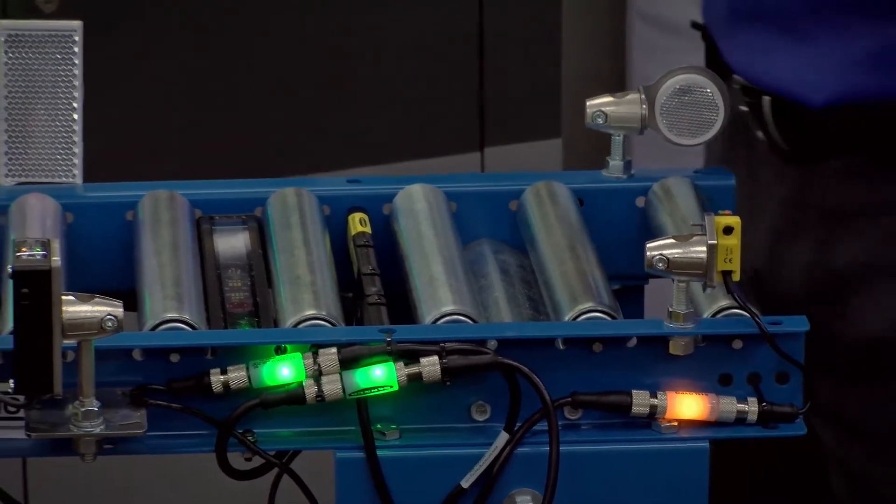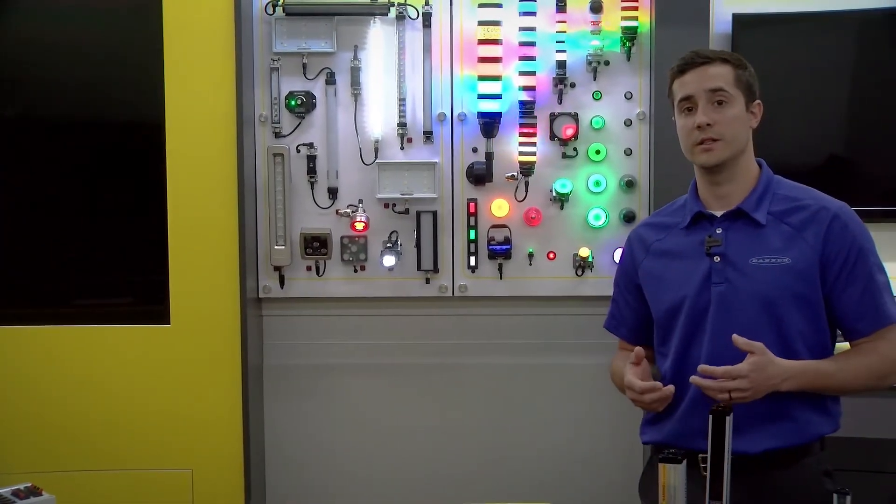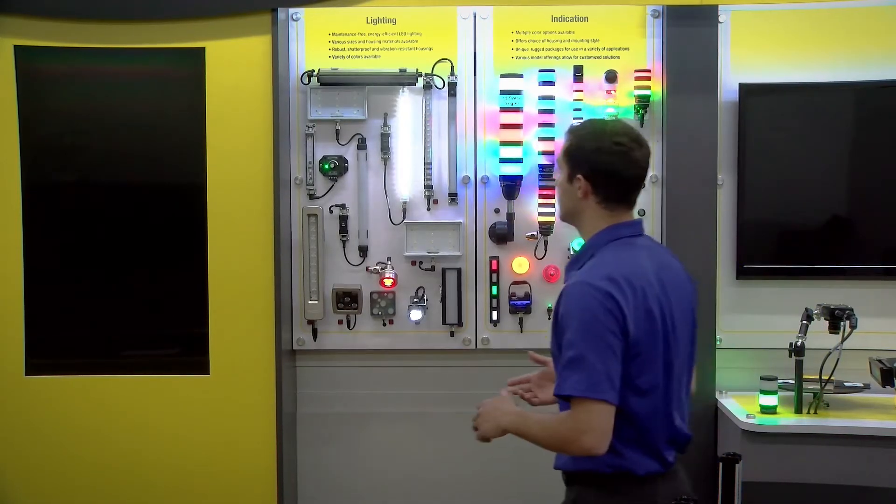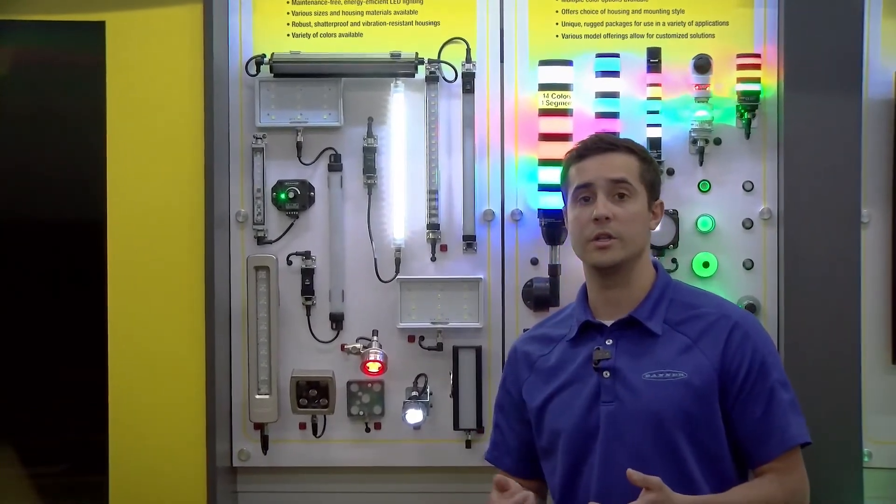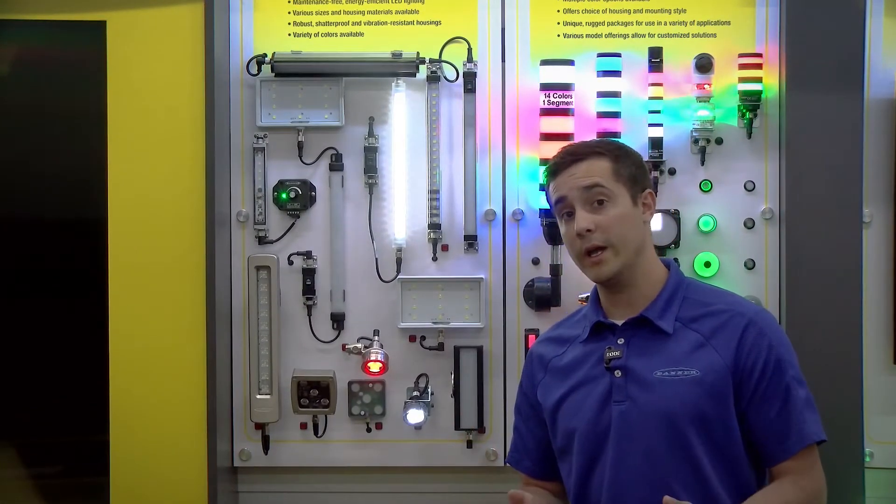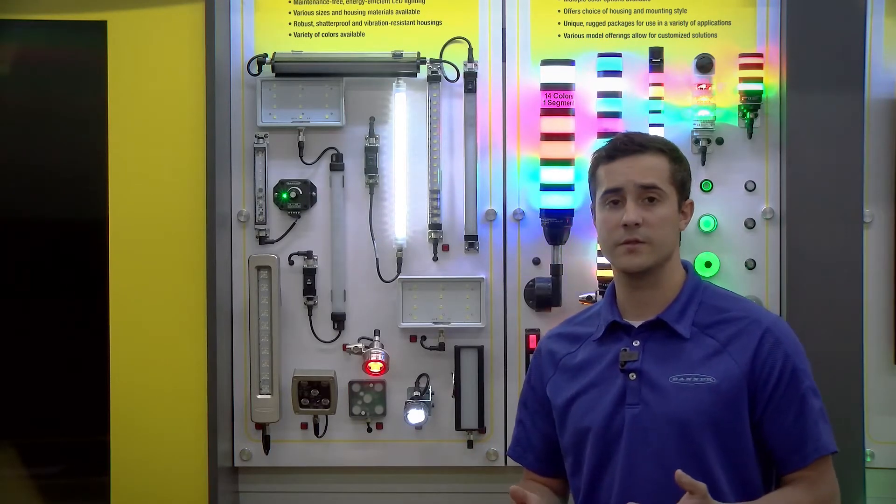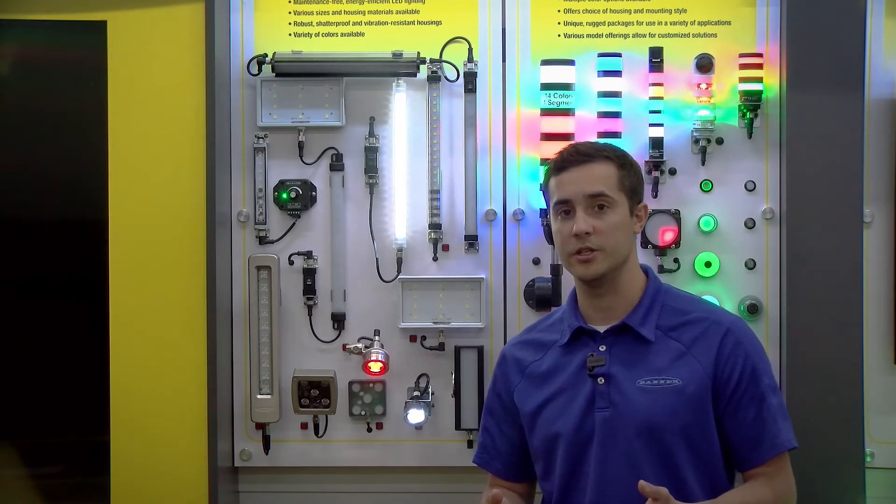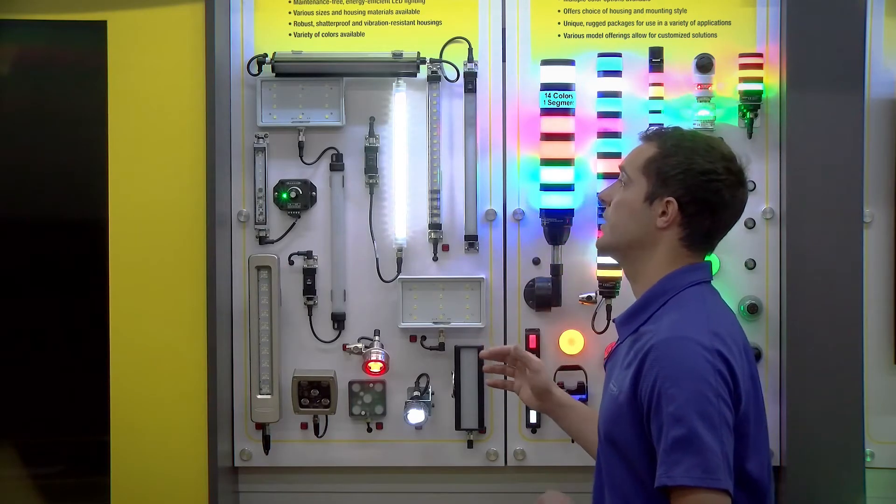So with that I want to move back to our demo board and show you one last class of products which are considered task lights or you may refer to them as illuminators. And you'll see many different form factors on this board. These are all going to be single color, either white or alternative color devices. Banner can illuminate any surface from 15 feet above the plant floor all the way down to a couple inches from an operator station.